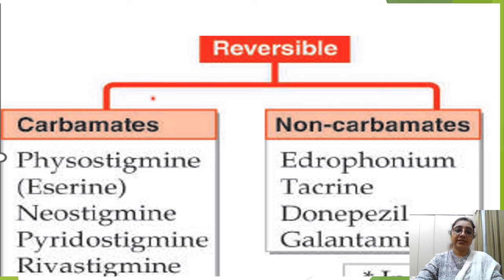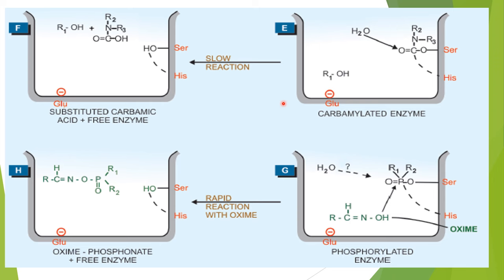Reversible anticholinesterases — carbamates (physostigmine, neostigmine, pyridostigmine, rivastigmine) and non-carbamates (edrophonium, tacrine, donepezil, galantamine) — have similar structure to acetylcholine. They combine with both anionic and esteratic sites of the enzyme, forming a complex that is less readily hydrolyzed than the normal acetylcholine-cholinesterase complex, temporarily inhibiting the enzyme and prolonging acetylcholine action at the synaptic cleft.